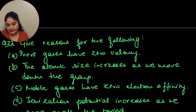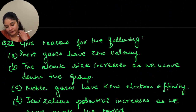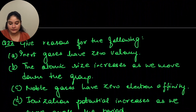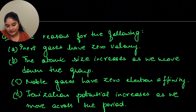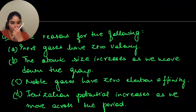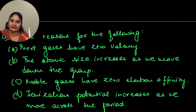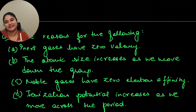Give reasons for the following. Inert gases have zero valency: because their octet is complete — neither are they looking to accept electrons, nor are they donating electrons, therefore their valency is zero. The atomic size increases as we move down the group: as we come down the group, the number of shells increases, and as the number of shells increases, the atomic size increases.